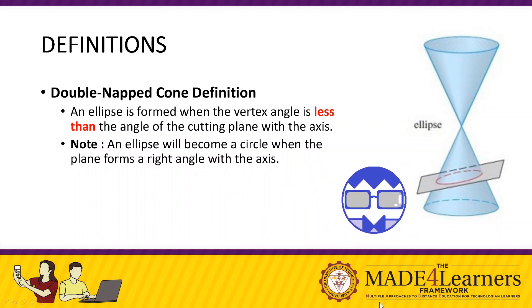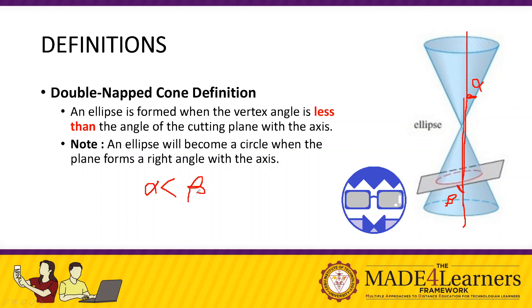So we have the axis here, and we have our vertex angle — the angle from the axis to the generator. We also have the angle of the plane, which we call beta. Whenever the vertex angle is less than beta, the angle formed by the cutting plane with the axis, we form an ellipse.